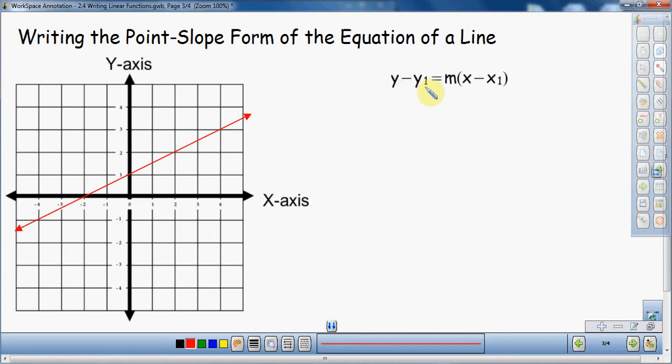So y minus y1 and x minus x1. Notice we have x1 and y1. That simply means your first x-coordinate and first y-coordinate. So we have to have a point. And we also have m, which is slope. So for point-slope form, I need to know a point, I need to know the slope, and I can write the equation of a line. We're going to look for a point and the slope to figure out what the equation of the line is.